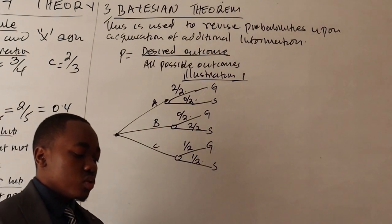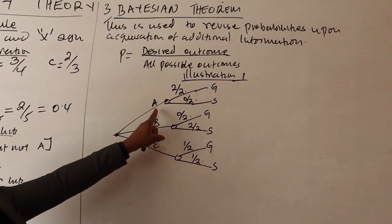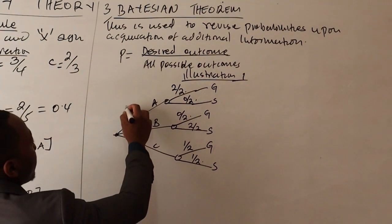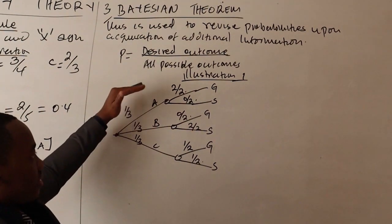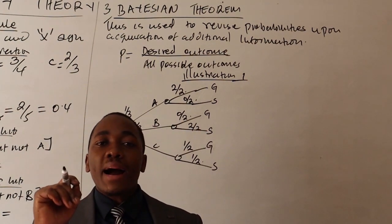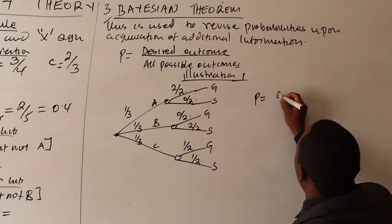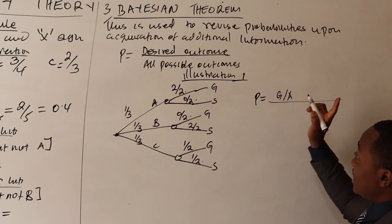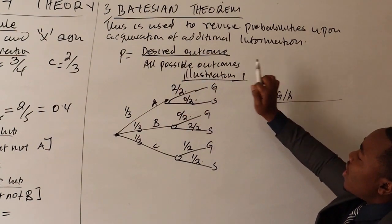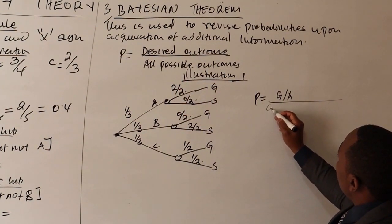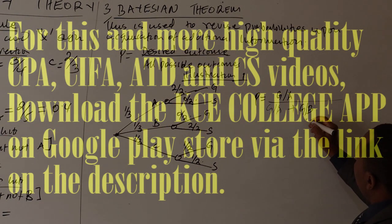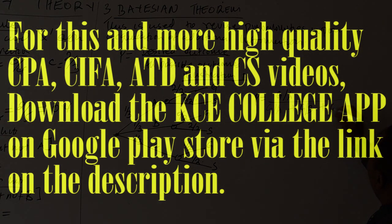The first question: probability of selecting Bag A from three bags is 1/3 since they are equally likely. The second question: probability of selecting a gold coin from Bag A. Probability equals desired outcome — a gold coin from Bag A — divided by all possible outcomes. All possible outcomes means you can get a gold coin from Bag A, or from Bag B, or from Bag C, using the addition sign.